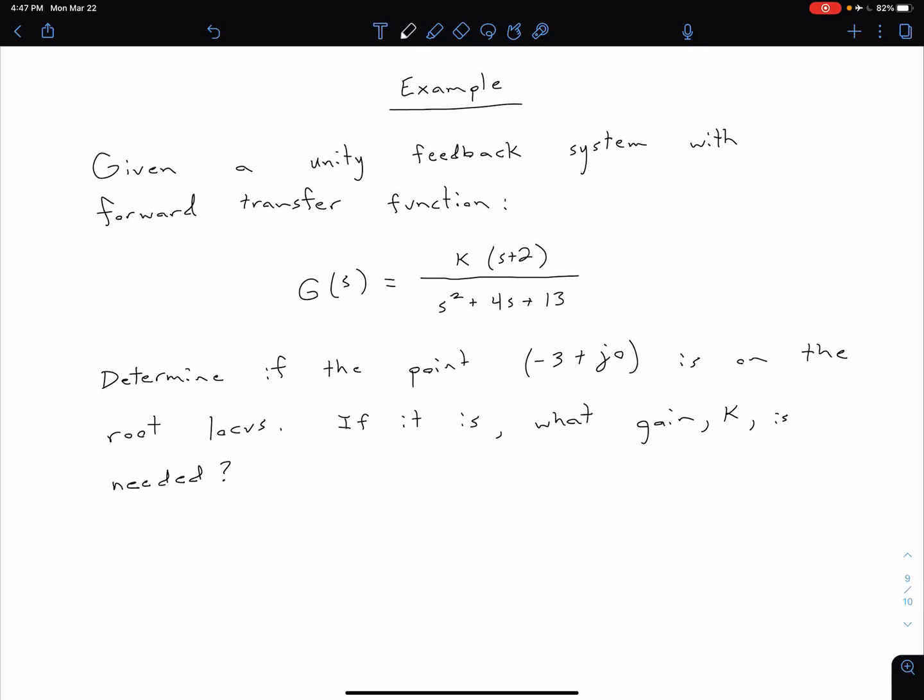We're now going to take a quick look at an example. Given a unity feedback system with a forward transfer function G(s) = K(s+2) / (s² + 4s + 13).